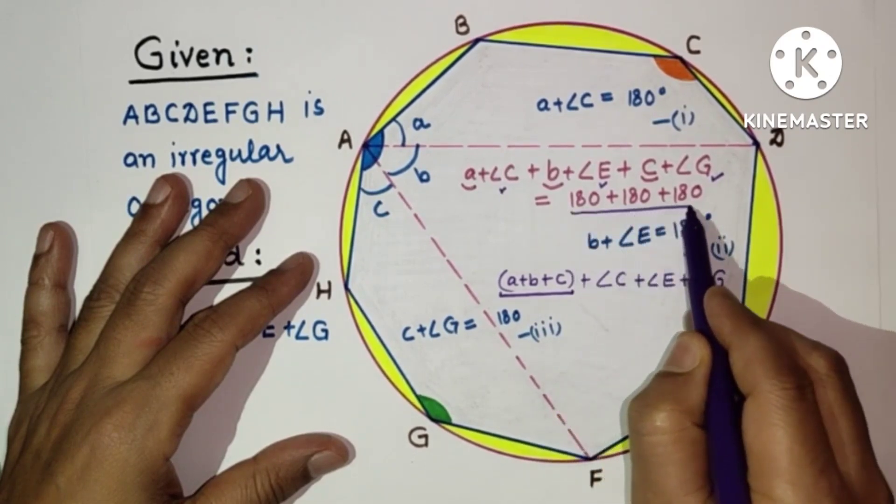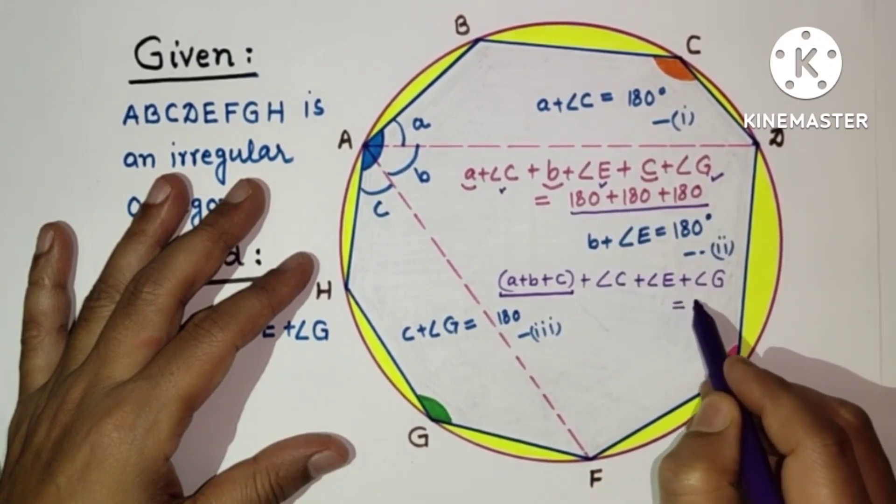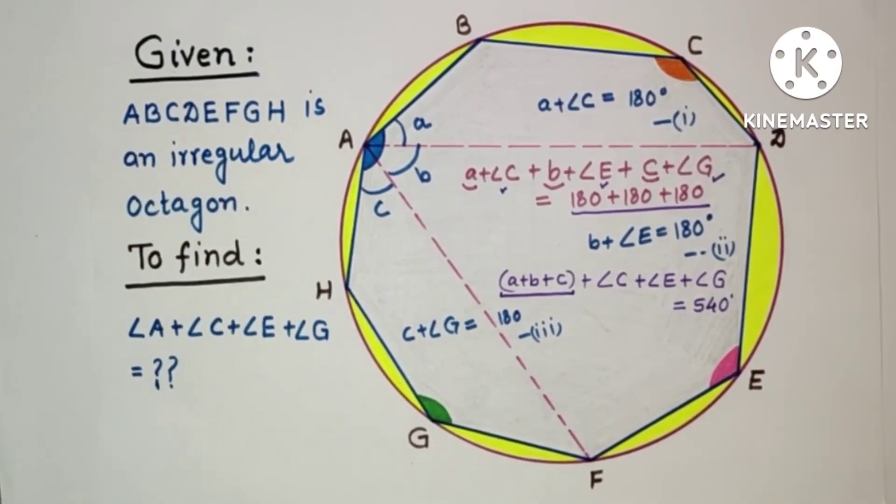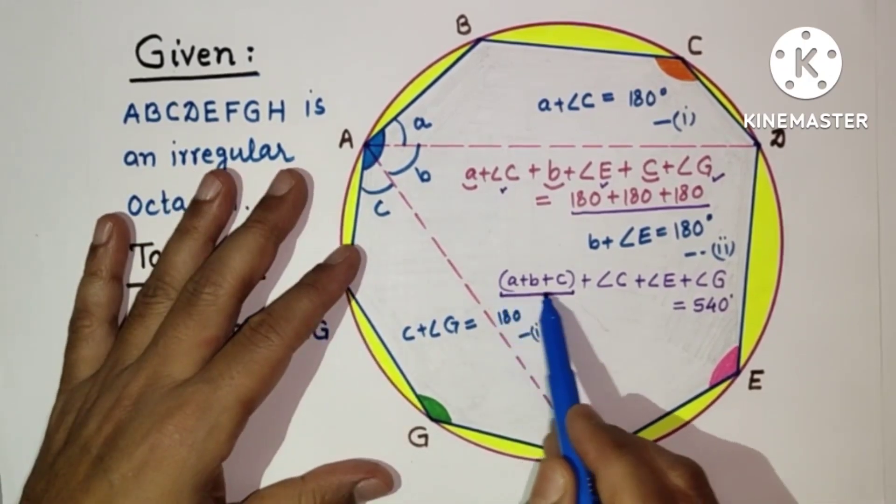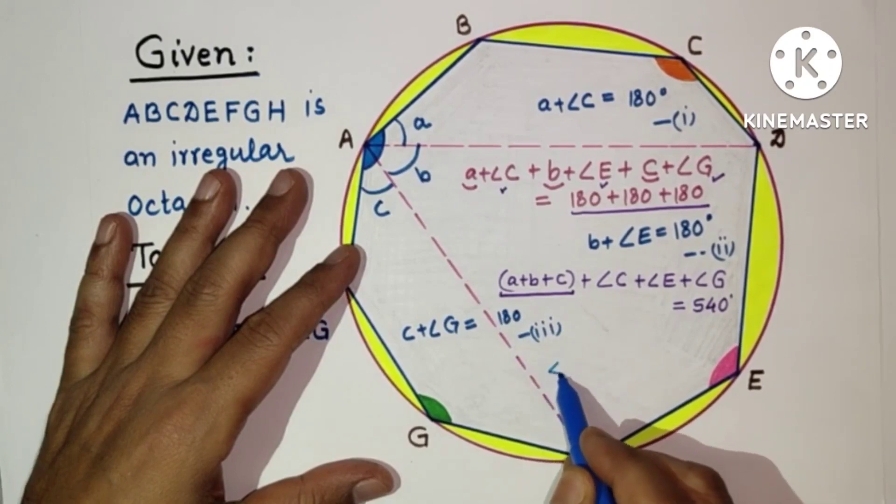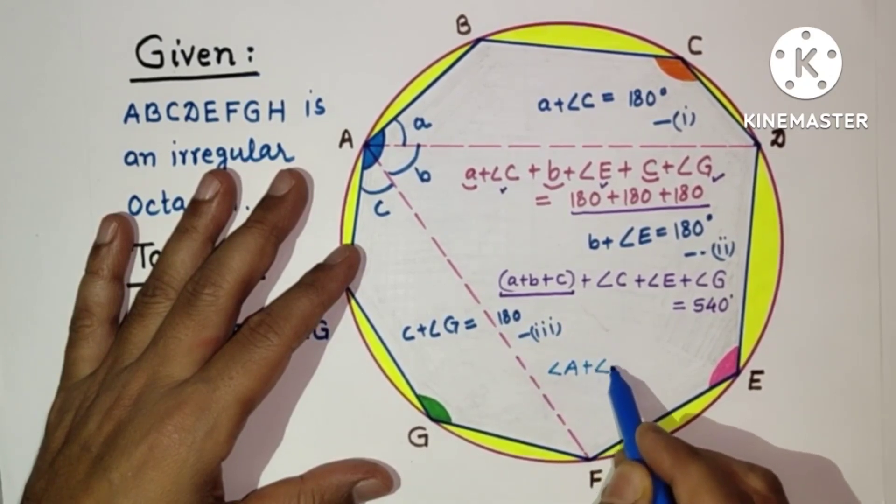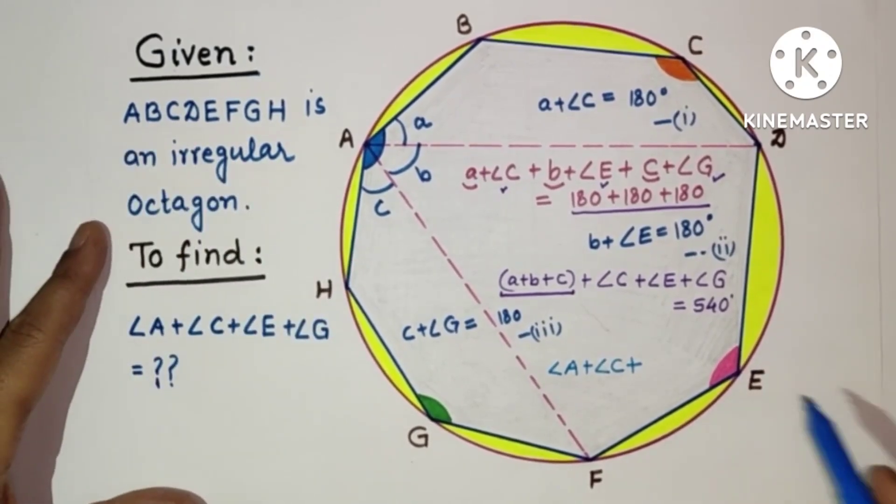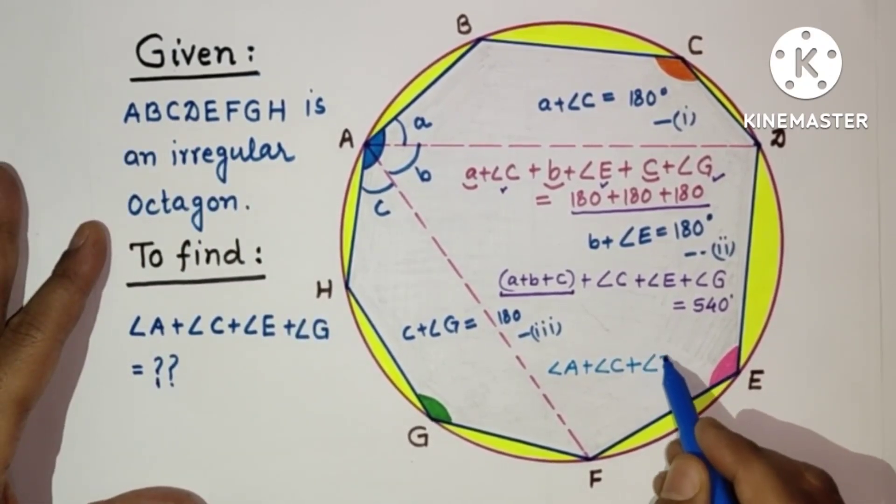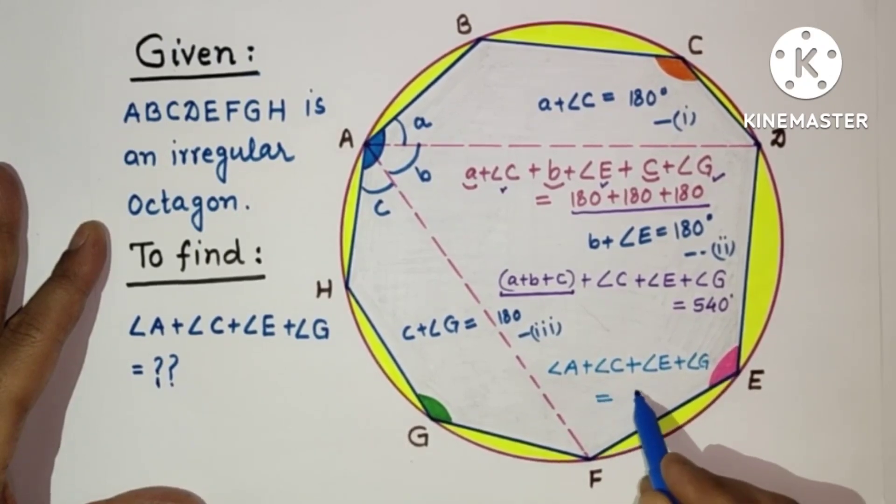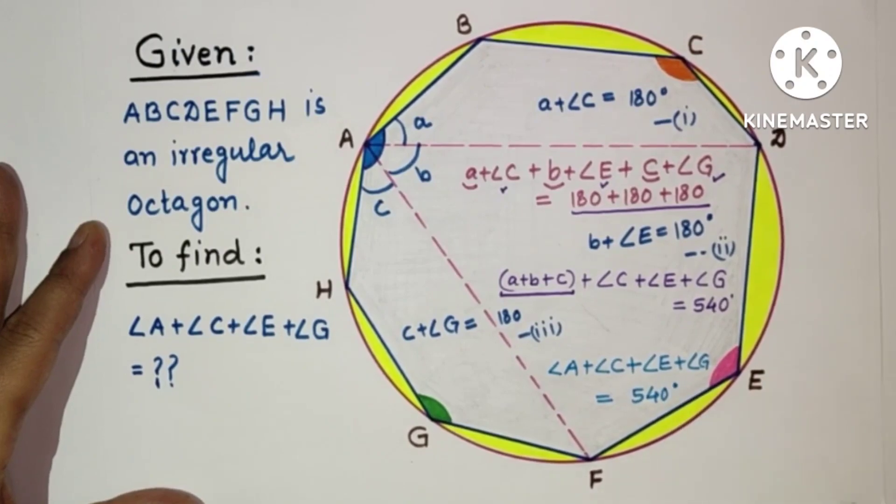Finally we are getting that angle A plus angle C plus angle E plus angle G equals 540 degrees, which is the answer.